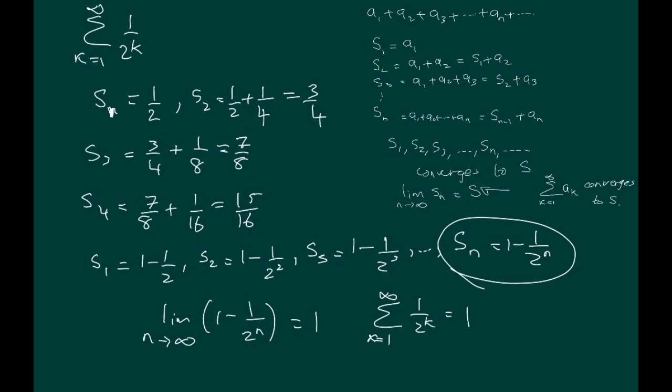This is a way where you can use partial sums to study the series in the form of a sequence of sums, and then see what happens as n goes to infinity to that sequence. If it does converge, that means the series also converges to that value.